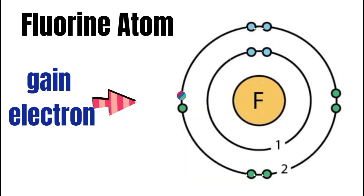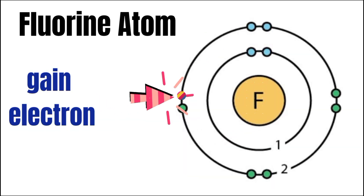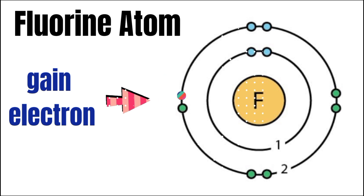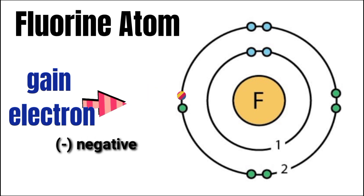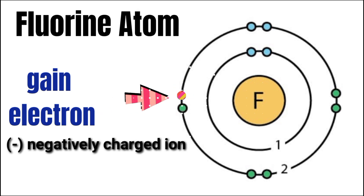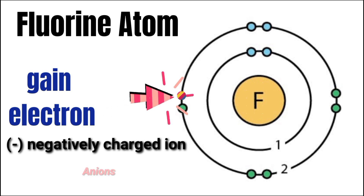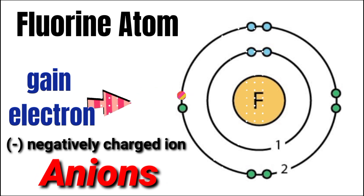But when an atom gains one or more electrons, it becomes a negatively charged ion, and this type of ion is called an anion.